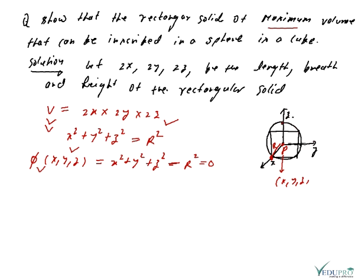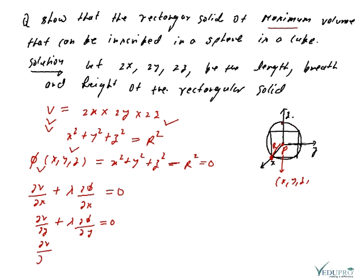According to Lagrange's method, we have three equations: (1) ∂V/∂x + λ·∂φ/∂x = 0, (2) ∂V/∂y + λ·∂φ/∂y = 0, and (3) ∂V/∂z + λ·∂φ/∂z = 0.